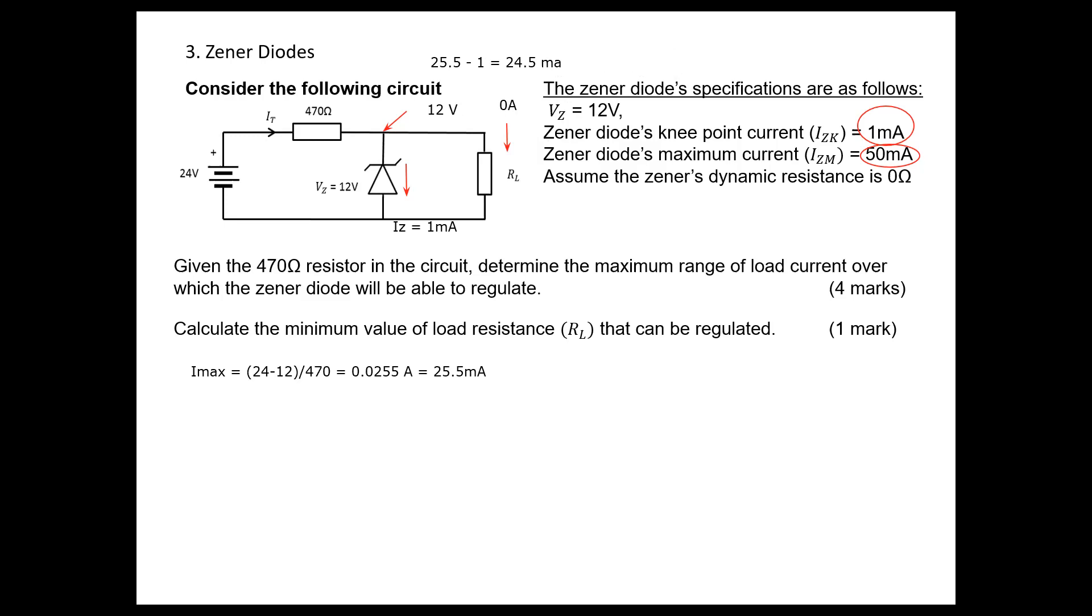We need to have 1 milliampere because in order to have regulation we need to maintain this minimum current. We calculated this maximum possible load current as 24.5 milliamperes. The current is limited by the resistor.